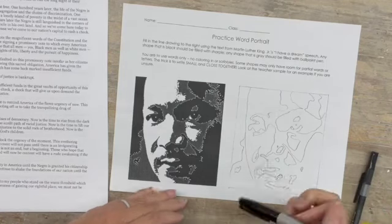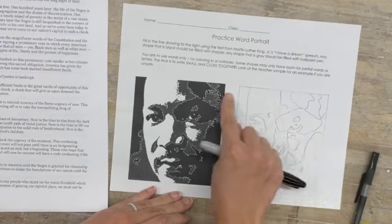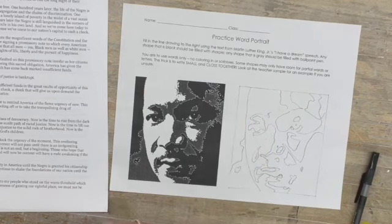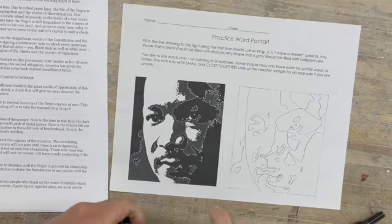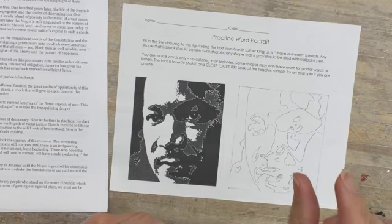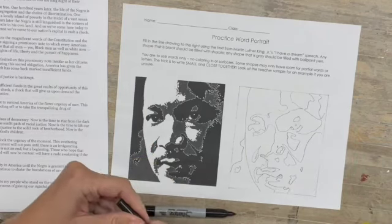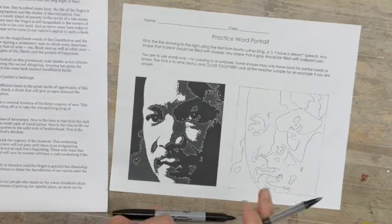It really depends on your preference whether you want to try to work up and down, whether you want to try to do section by section. That really is your preference, but the key to doing this is to write small and to write close together. You don't want to leave a lot of gaps between words or between lines.